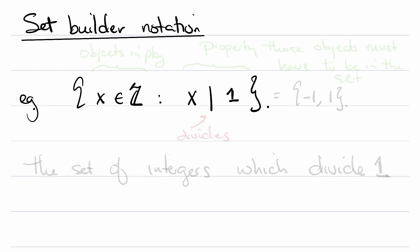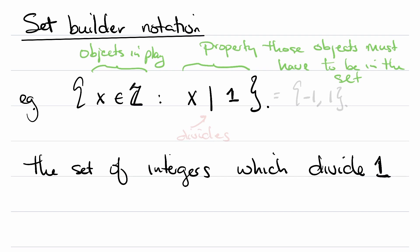Then on the left of the colon you have the objects in play, in this case integers. And on the right of the colon you have the property those objects must have to be in the set. So said otherwise, this is the set of integers which divide 1, where this is the symbol for divides. This is the set negative 1 and 1.